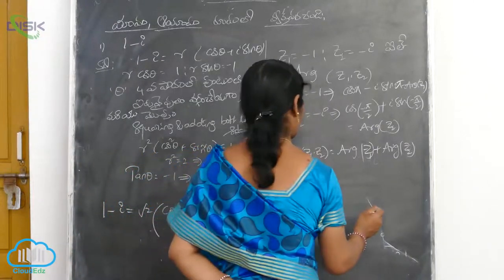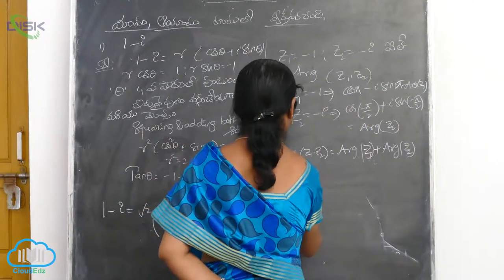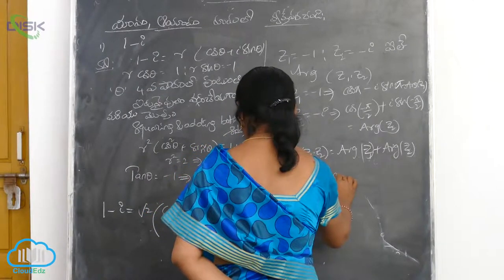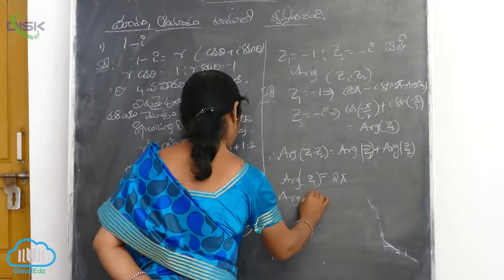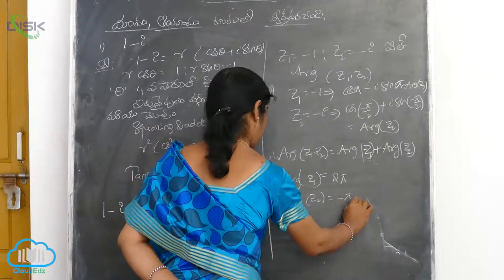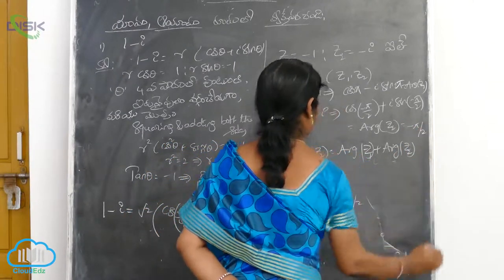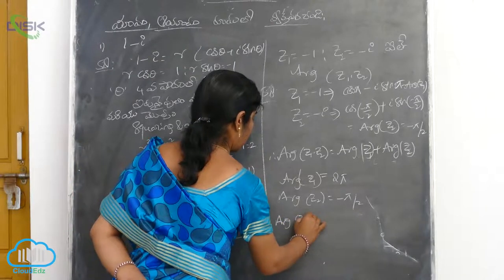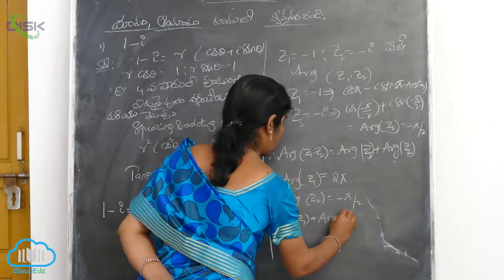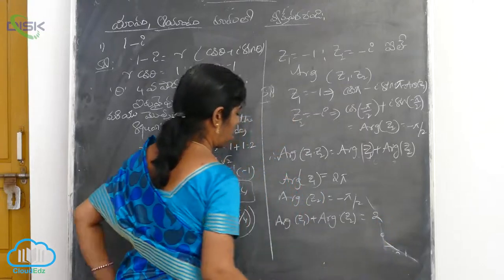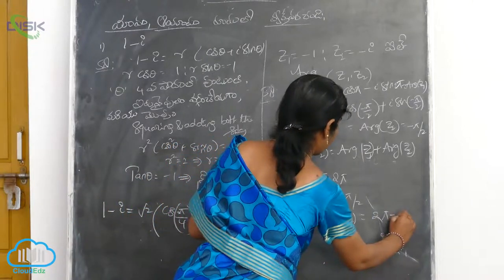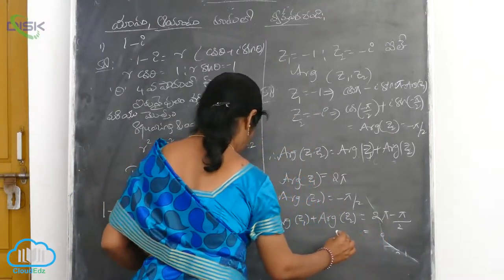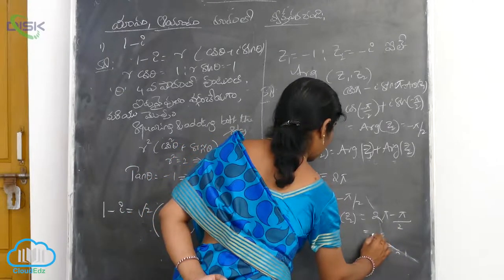Z1 equals 2 pi. The argument of Z1 is minus pi by 2. So 4 pi minus 2 pi minus pi by 2, which equals pi by 2. And pi minus pi by 2 equals 2 pi minus pi by 2, giving pi by 2.